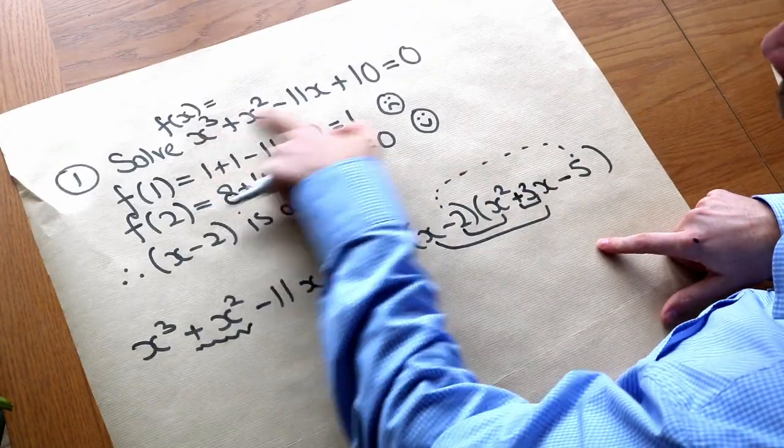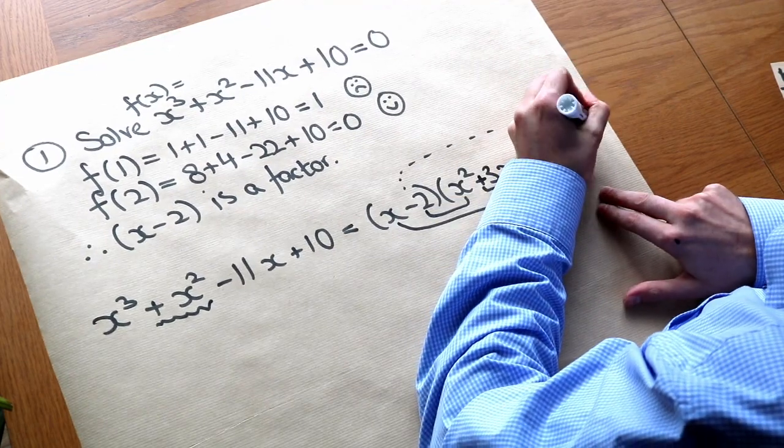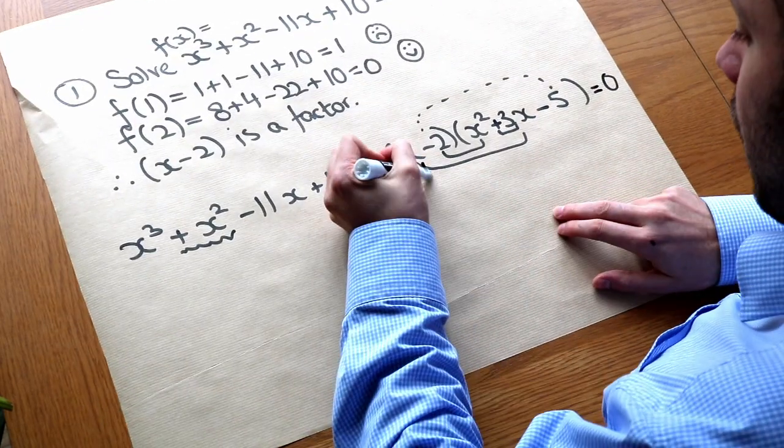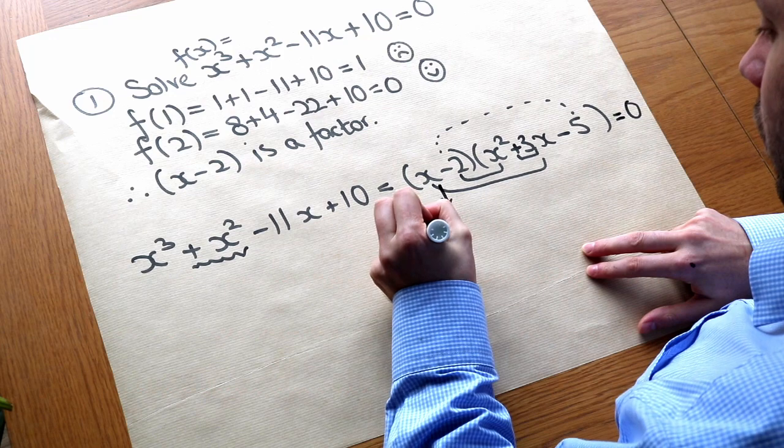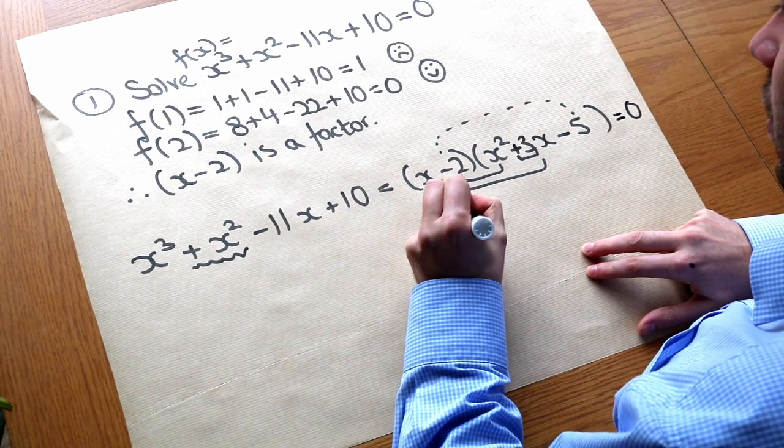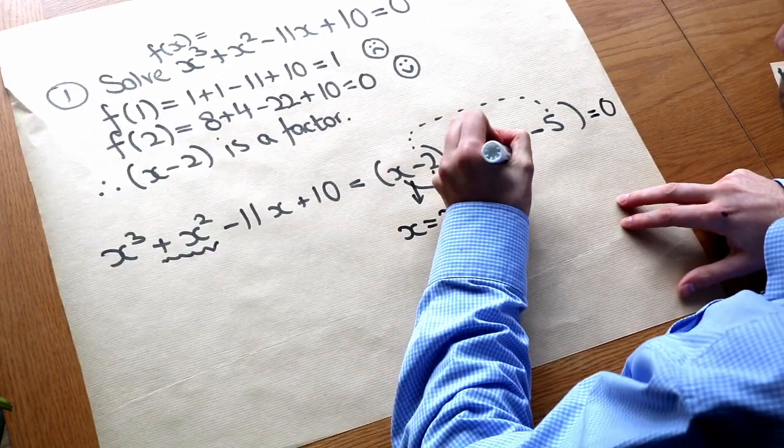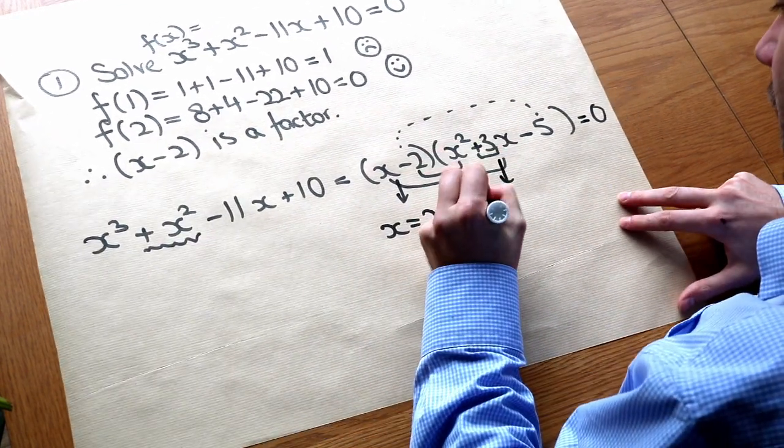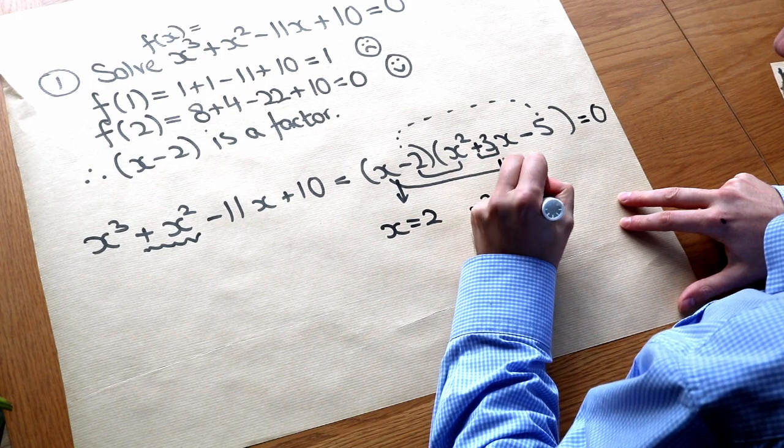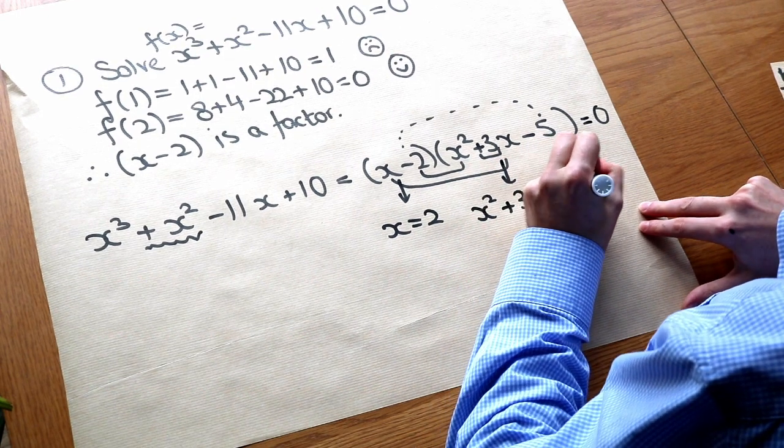Now we said we're solving this equals zero so we want this is equal to zero. So that gives us one solution of x equals two which we already knew was a solution because two satisfies this equation. But we also get this second solution where x squared plus three x minus five is equal to zero.